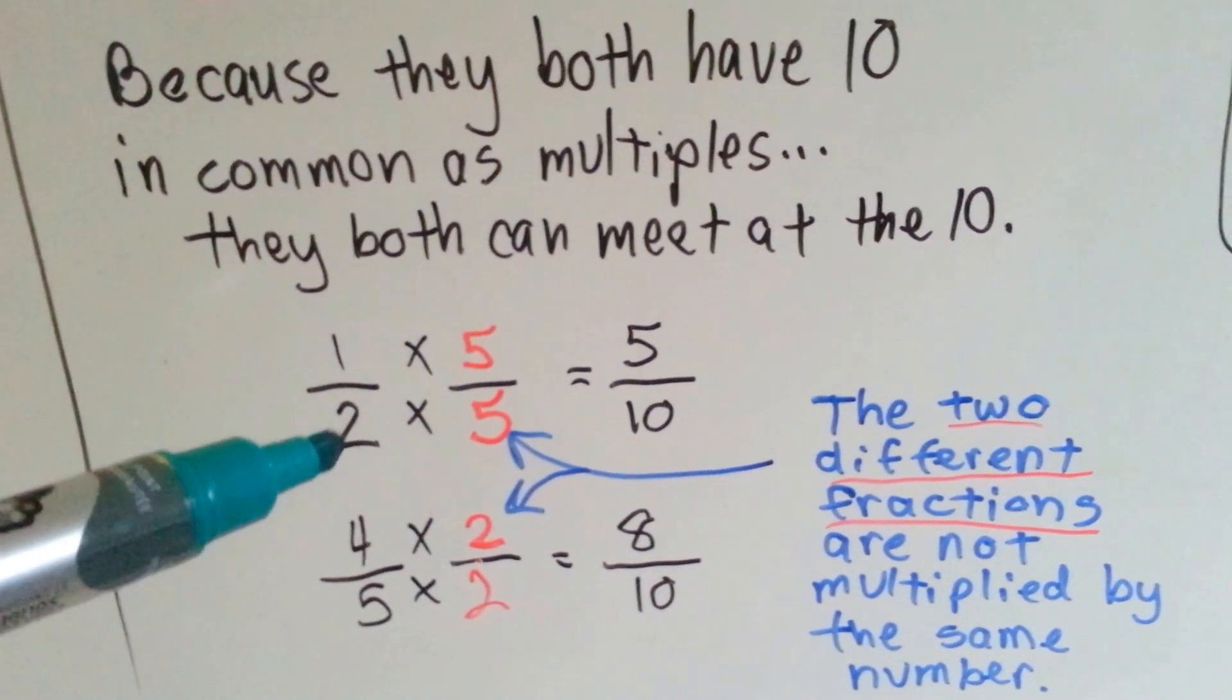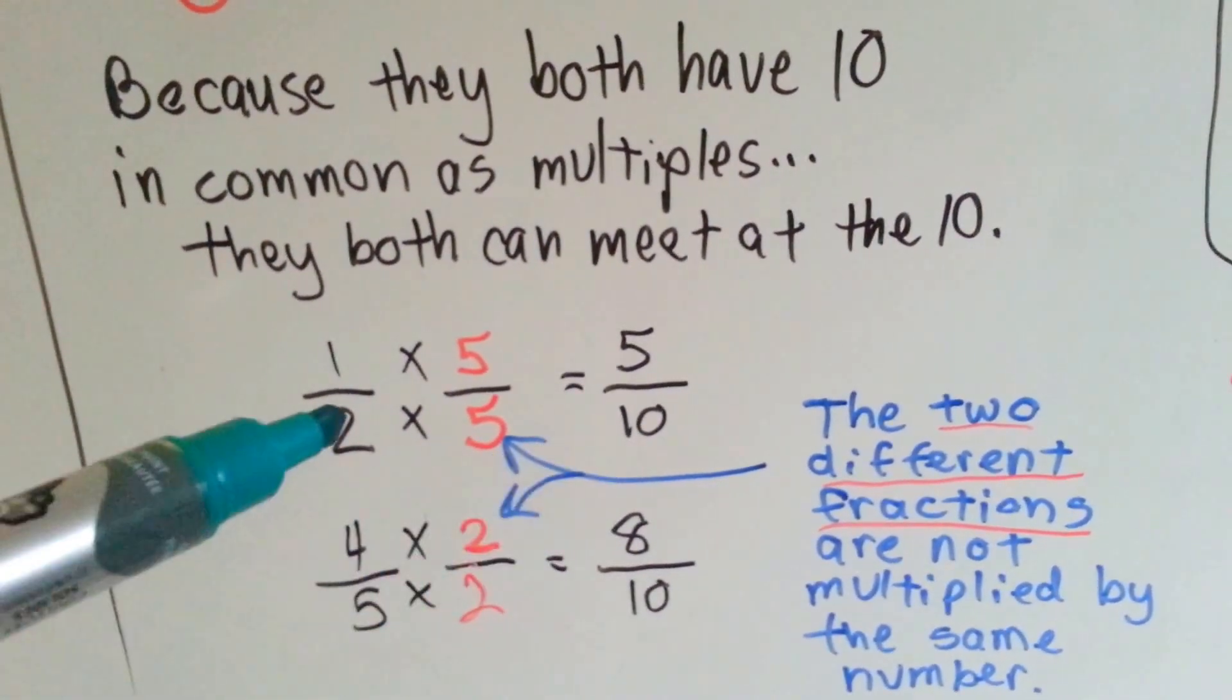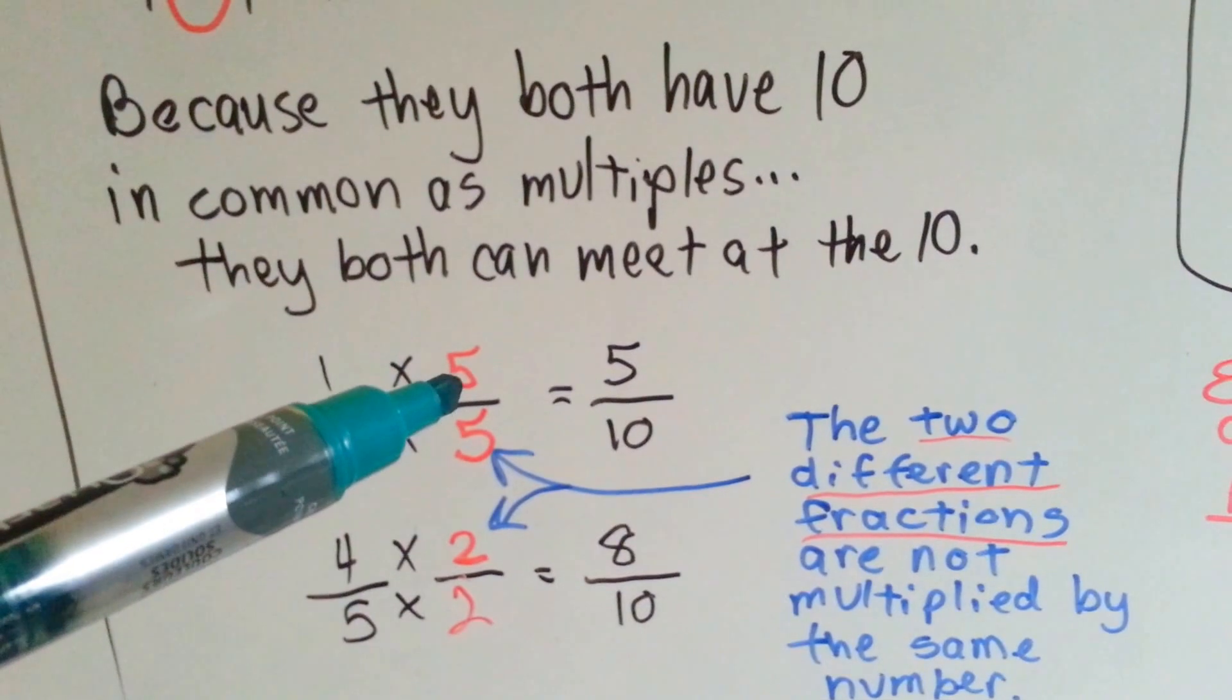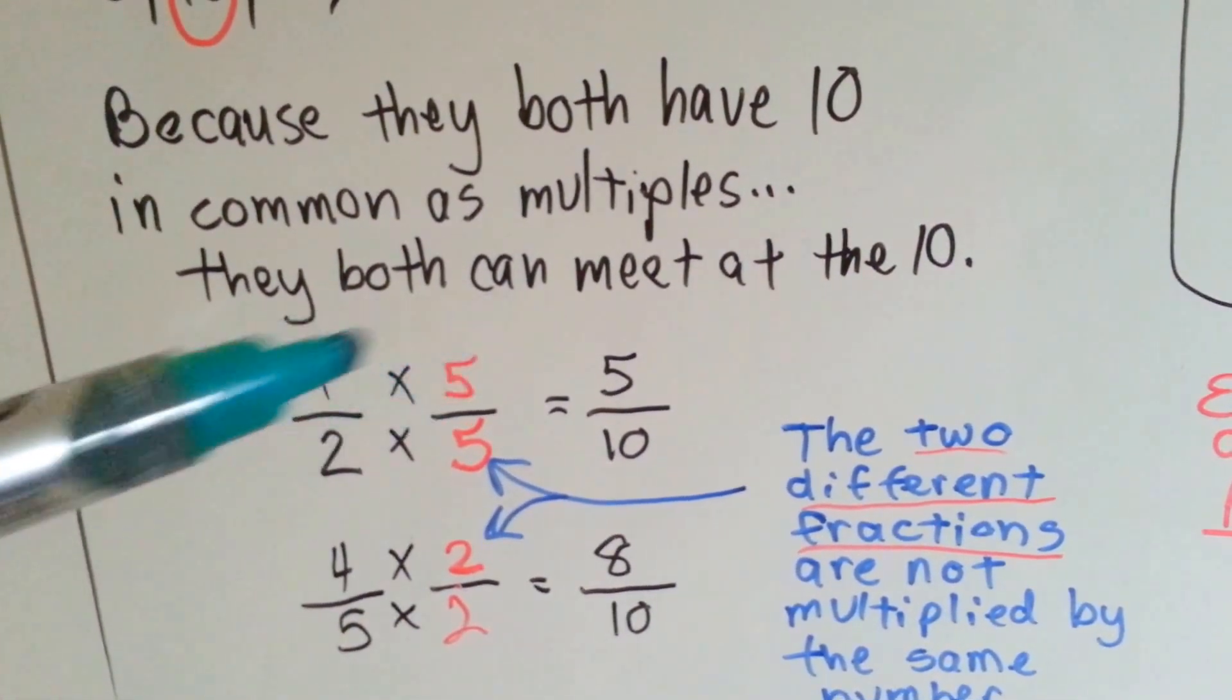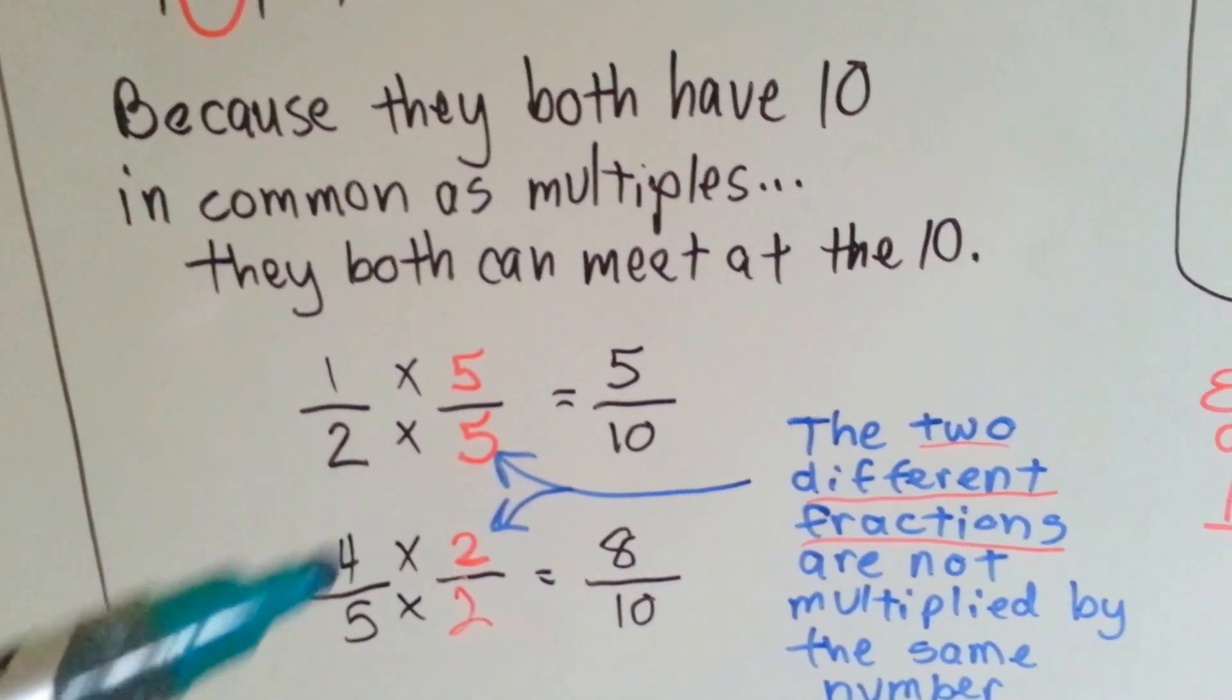We ask, what does 2 need to become a 10? It needs to be multiplied by 5. The 1 gets jealous, so it gets multiplied by 5. 1 times 5 is 5, and 2 times 5 is 10.